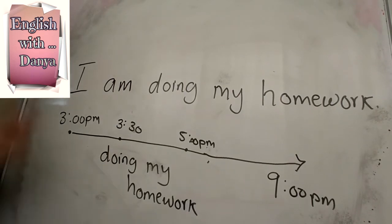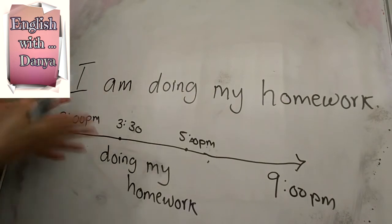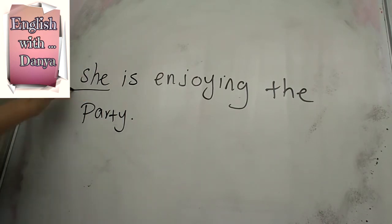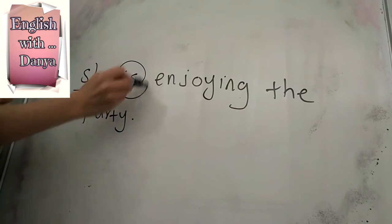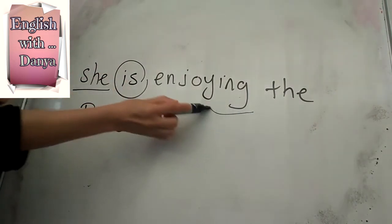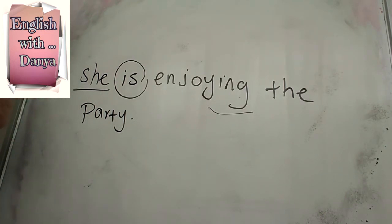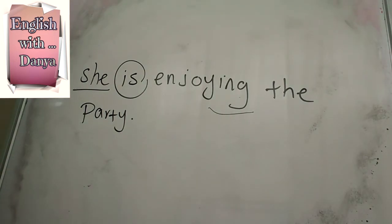Let's have another example to understand this well. Look at this sentence: 'She is enjoying the party.' Here we have 'she' with 'is,' and then the '-ing' form — 'enjoying' — because we are talking about something that is happening right now. There is a party going on and she is in the party and she likes it, so we say she is enjoying it.